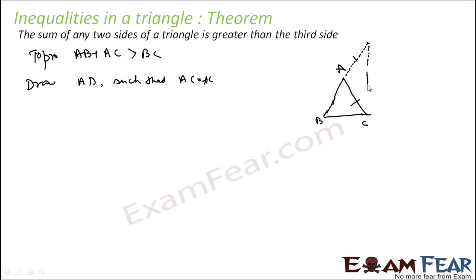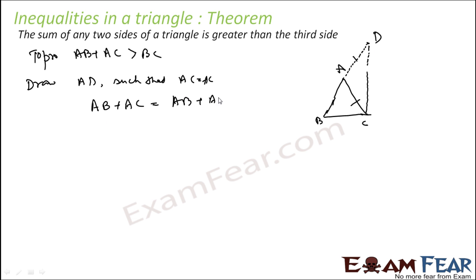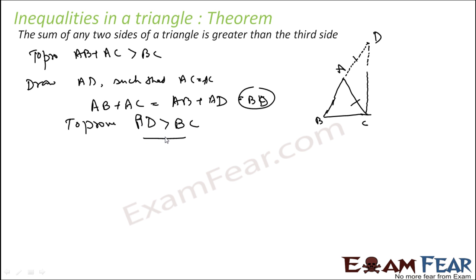So AD is equal to AC. Now AB plus AC is nothing but AB plus AD, which is BD. So we have to prove that BD is greater than BC.